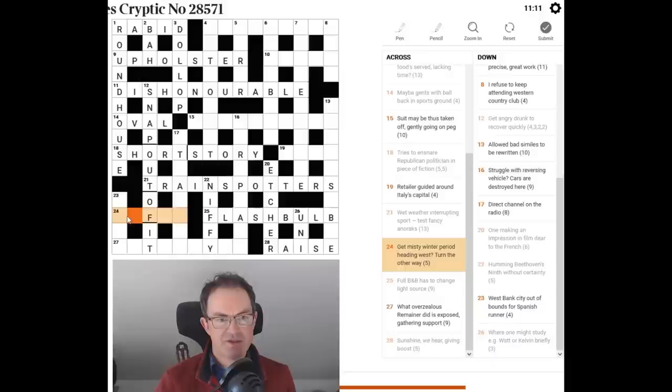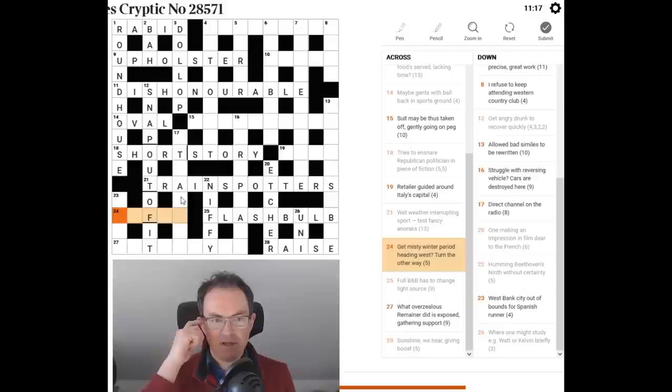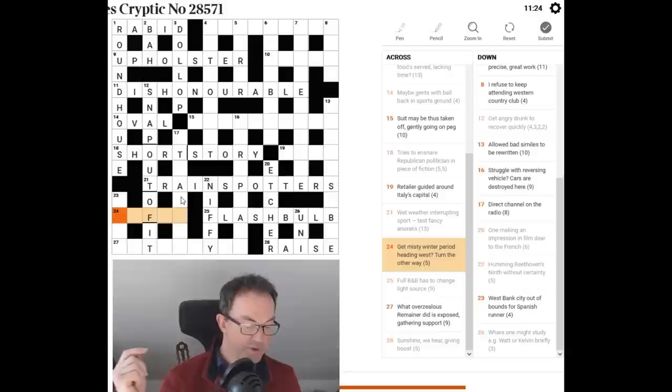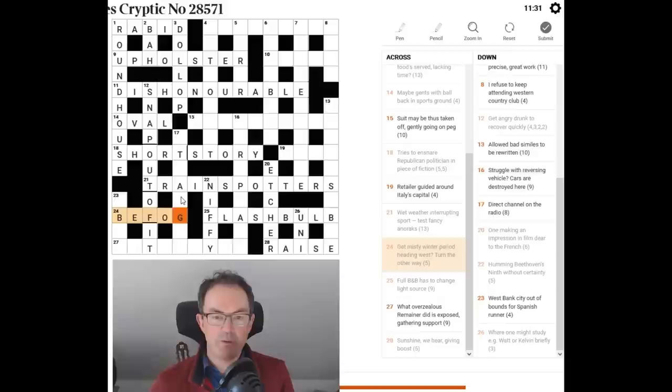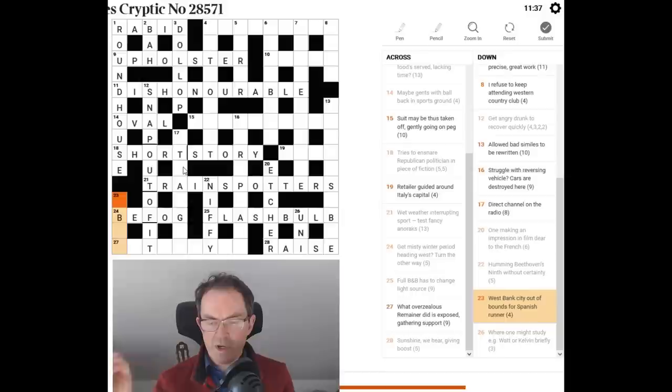So now we've got the quandary haven't we. Let's try this F here. If we can get. Because then if we can get 23 down we might be able to get 27 across. So get misty before. I'm thinking winter fear winter period heading west. February backwards. That's going to be right isn't it. Turn the other way. A turn is a go. If you have a go at something you have a turn at it. And we put that the other way. We reverse it. And we get before.